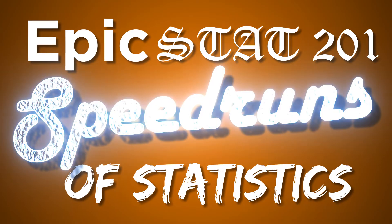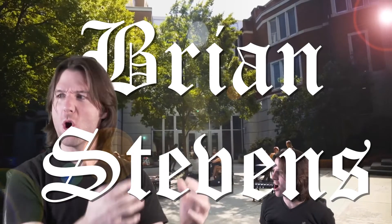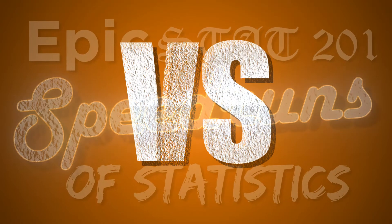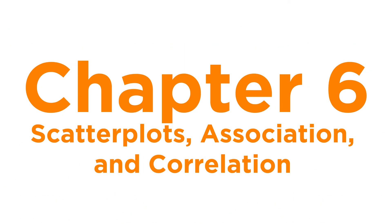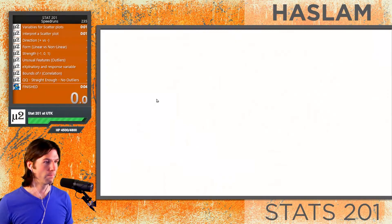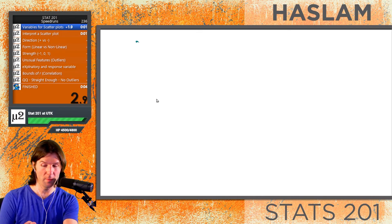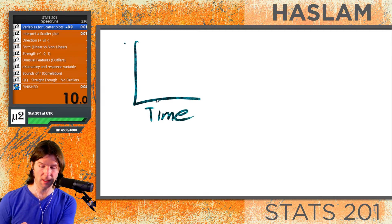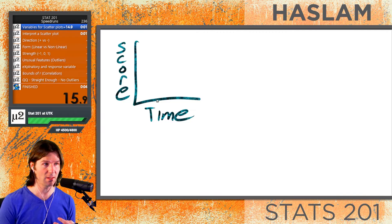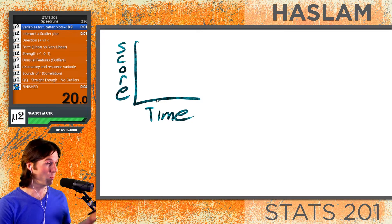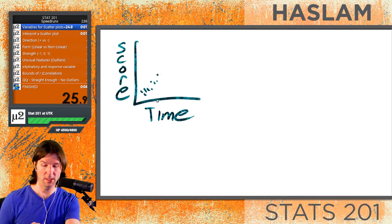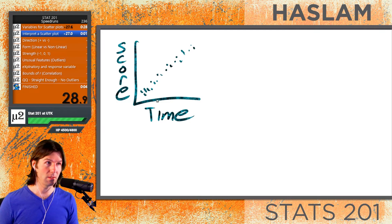Welcome to the Epic Stat Tool speedrun on scatter plots, associations, and correlation. When you make scatter plots, you're working with two quantitative variables. For example, time spent studying and your score on a test — both are quantitative, meaning they're real numbers we can do mathematics on, like subtracting two people's scores to talk about a difference.